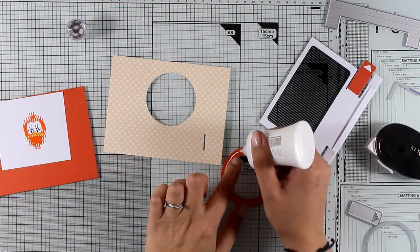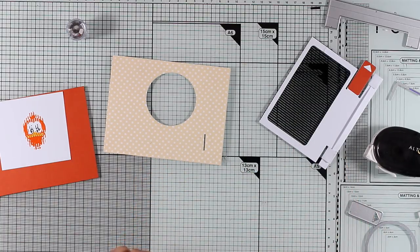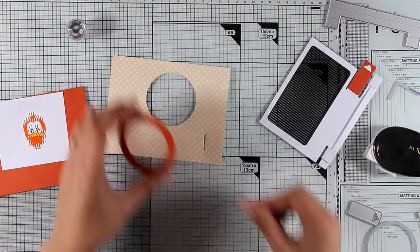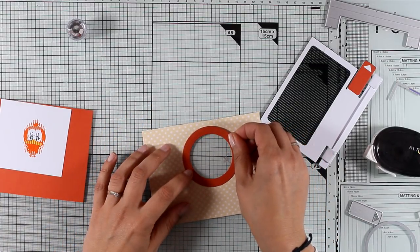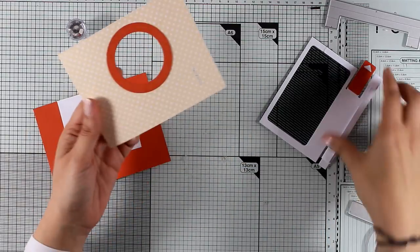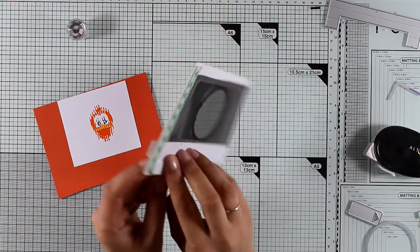I used the same cardstock, the orange cardstock for that. With the circle dies that I used to cut out that little window, I nested them one inside the other to create a little ring just to place it on top for a more finished look.